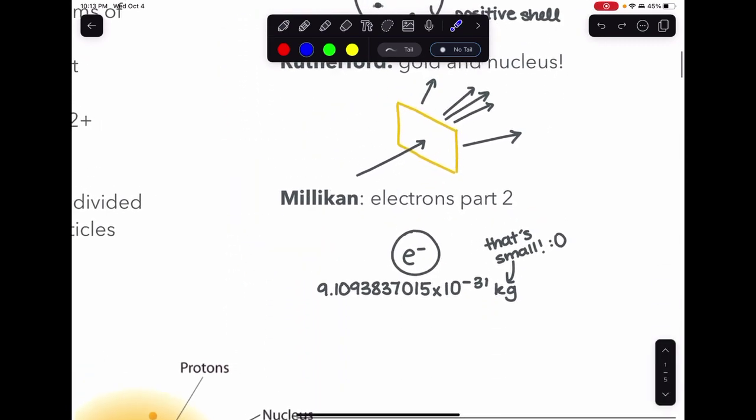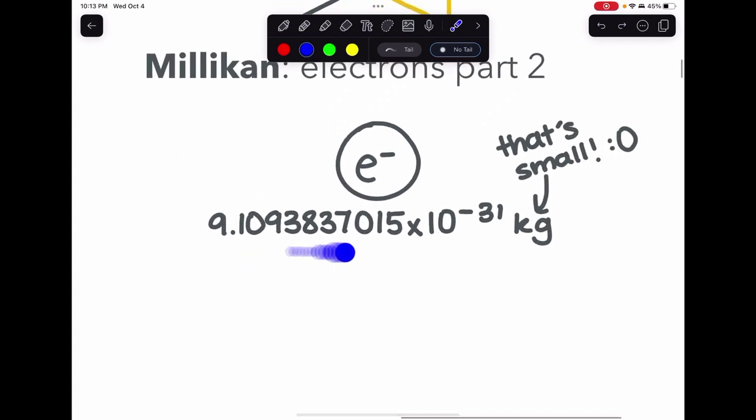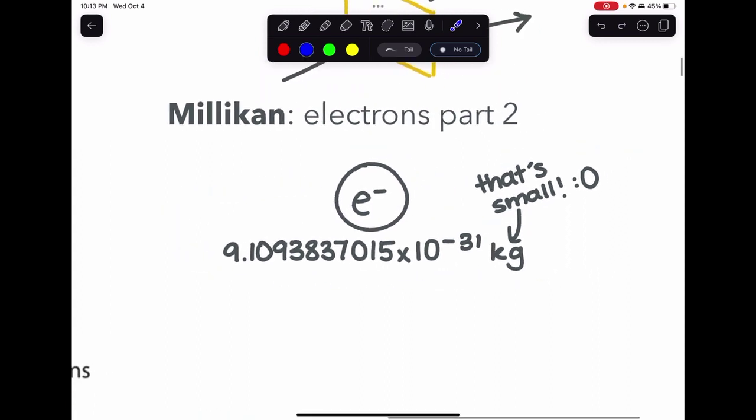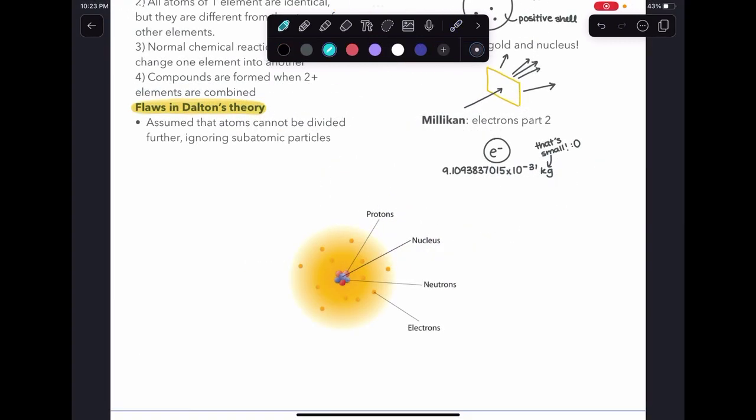And Millikan, basically electrons part two. He built upon Thompson's work by assigning a discrete charge of one minus to an electron and finding its mass, which is here. You don't have to know this, it's just to demonstrate how small an electron really is. Going forward, it's important to know that an electron has a negligible mass.